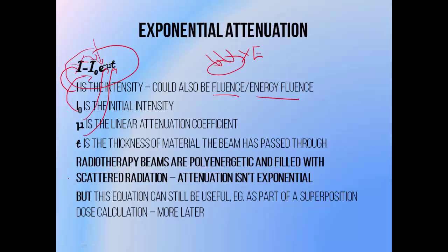True exponential attenuation is what we call an ideal situation — something that doesn't actually occur in reality. Exponential attenuation only holds true for mono-energetic beams, so photon beams containing particles of only one energy. Radiotherapy photon beams are always poly-energetic to some degree, made up of photons of different energies. Attenuation is also only truly exponential when there is no scattered radiation, which is never true in reality. But this equation can still be useful as part of a more complicated method of dose calculation.